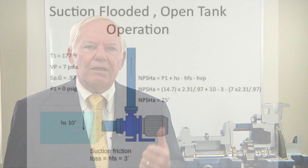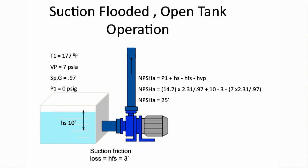Let's look at some examples. First, an open tank pumping 177-degree water, with a water level 10 feet above suction and a calculated 3 feet of pressure loss. Since the tank is atmospheric and at sea level, the pressure is 14.7 PSIA. Convert this to feet of liquid, add the static height, subtract the vapor pressure and the friction losses converted to feet of liquid, and what's left is the pressure above vapor pressure — which in this case is 25 feet.